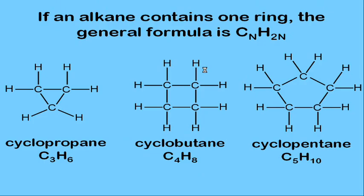If your hydrocarbon contains a ring, the formula is a little different. Instead of CₙH₂ₙ₊₂, it becomes CₙH₂ₙ. You lose those two hydrogens because when the chain closes on itself, the two hydrogens on the end go away. So the formula for a three-membered ring is not C₃H₈ but C₃H₆.